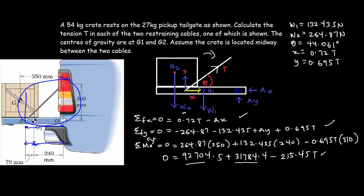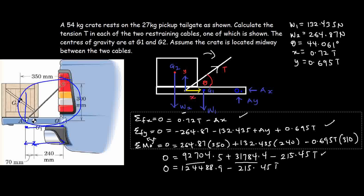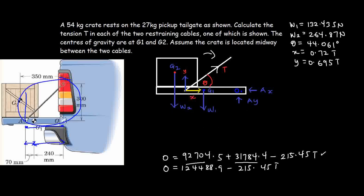Simplifying the moment equation: 264.87 × 350 = 92,704.5; plus 132.435 × 2040 = 270,167.4 — wait, combining these gives a total of 124,488.9 on the right-hand side; minus 0.695T × 310 = 215.45T. So we have 215.45T = 124,488.9, and dividing both sides by 215.45 gives the value of T.